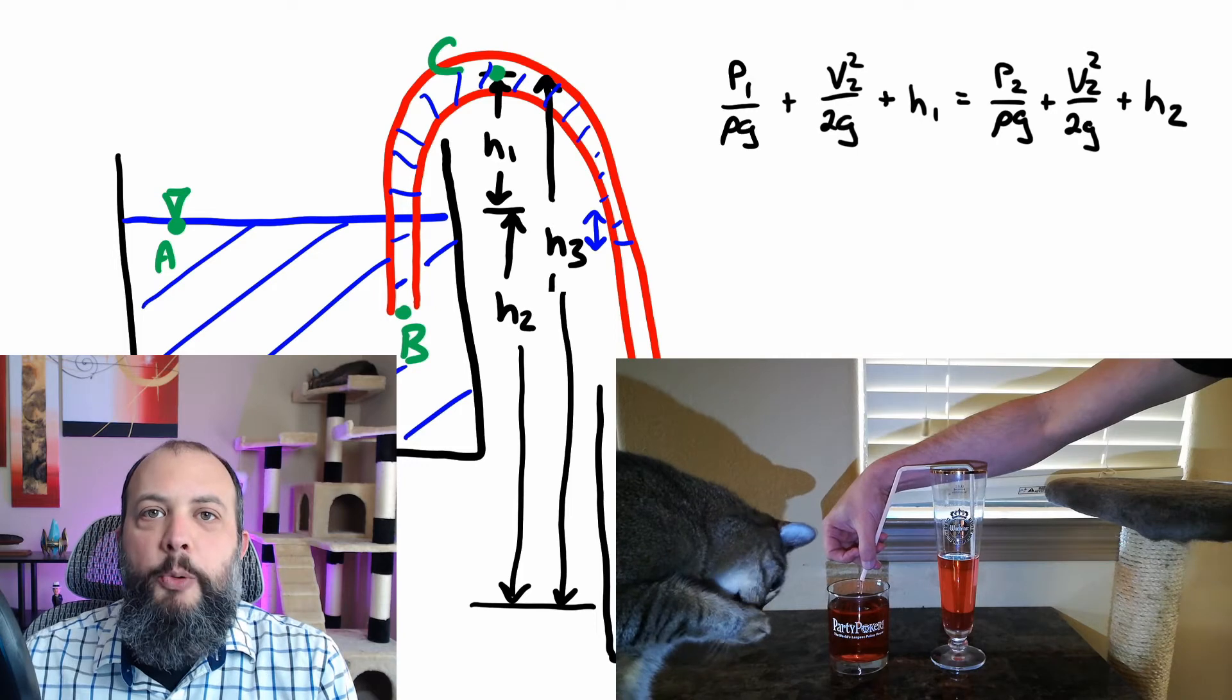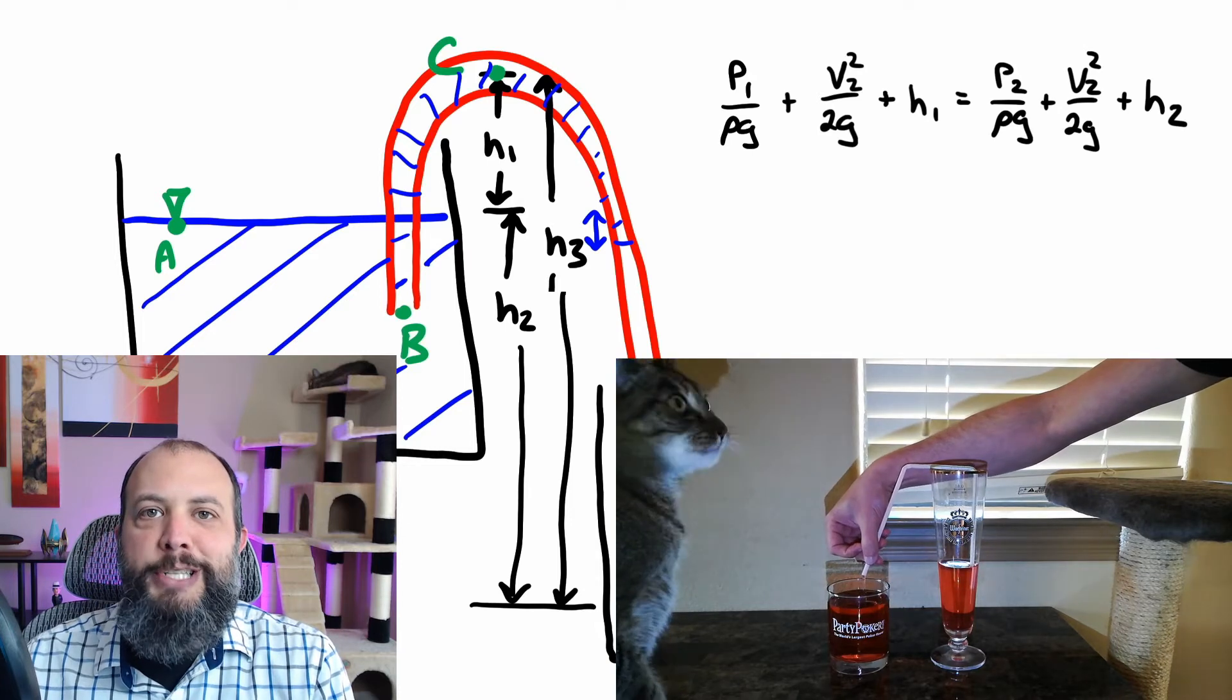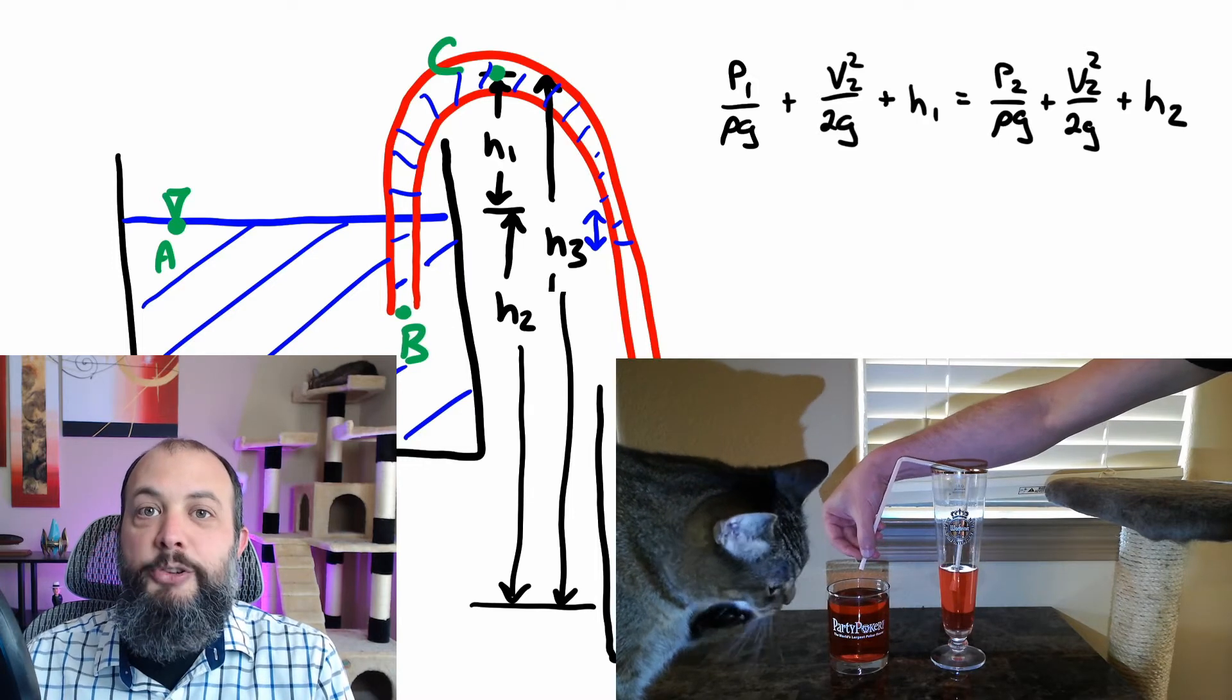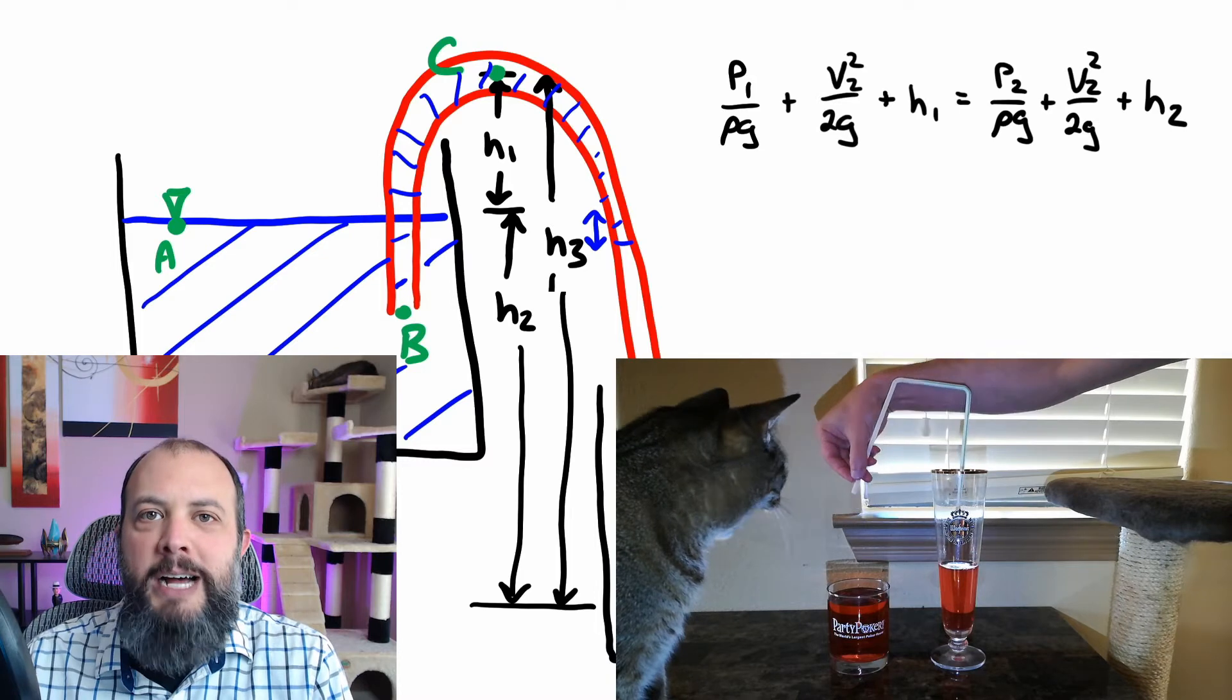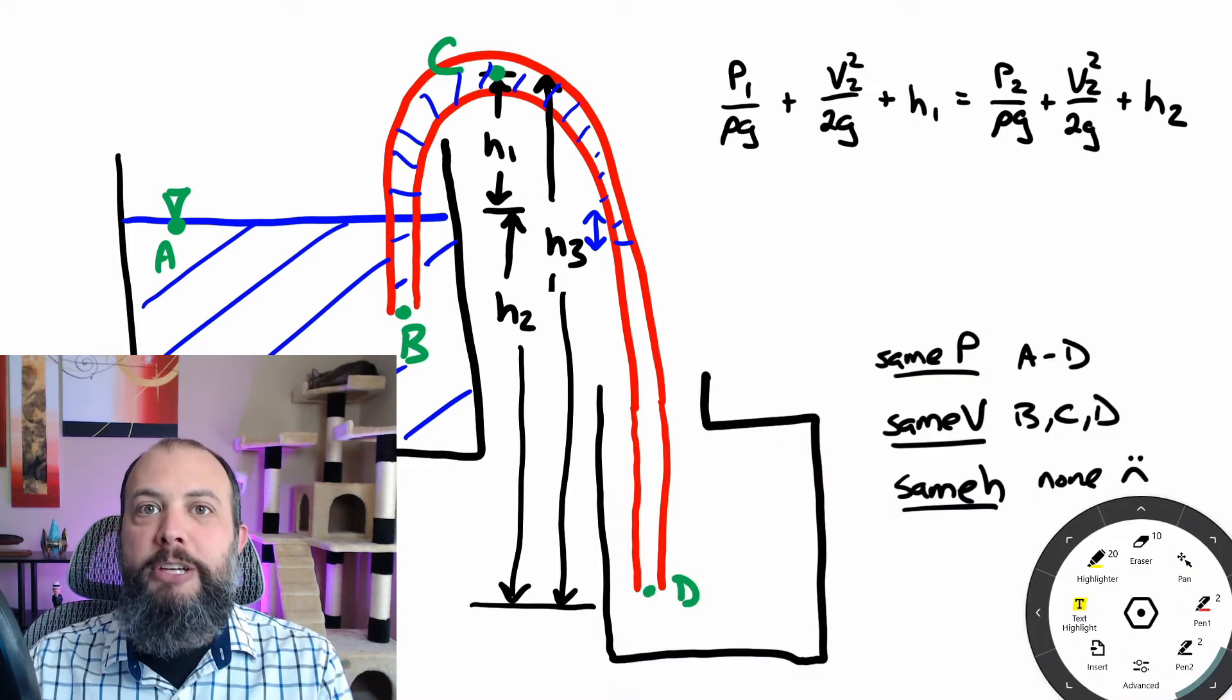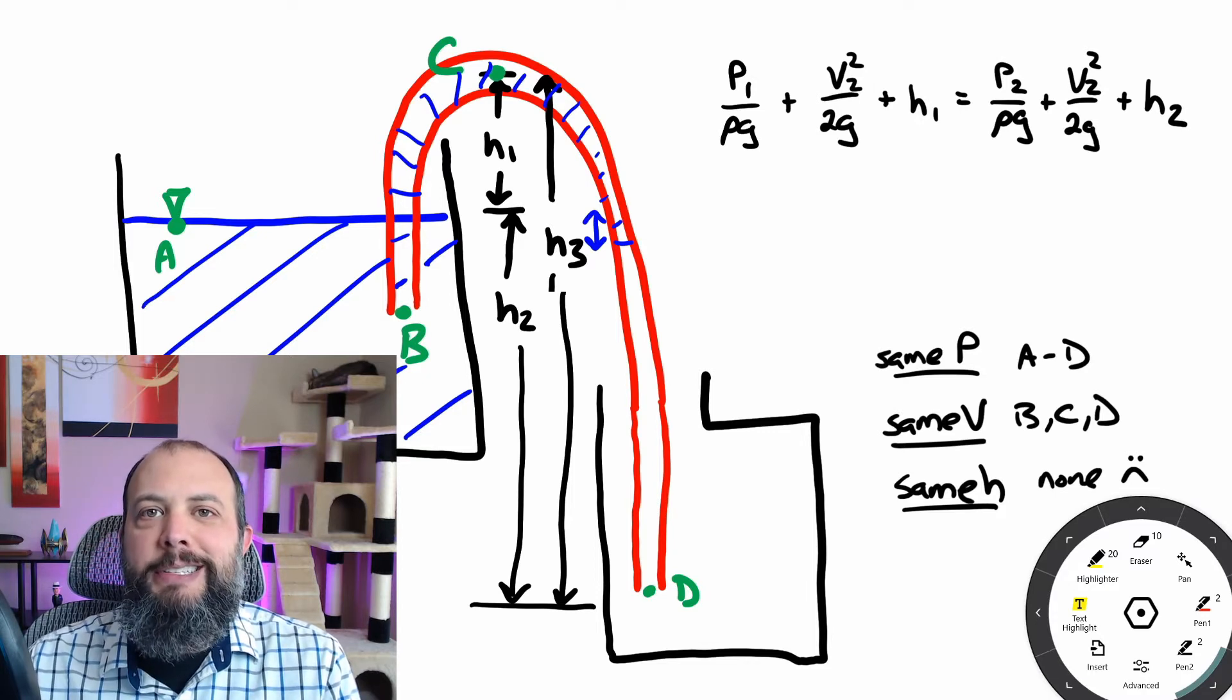All right, so how does all this apply to Bernoulli's equation? So I have the head form of Bernoulli's equation on the screen right now, and this is the version where all terms are in units of length or height. And when using Bernoulli's equation, you're always going to use it to compare two points to each other, and it's always going to be easiest if you can compare two points that have something in common. So in order to solve any sort of problem to deal with the siphon, we're going to either compare points A and D, because they're at the same pressure as each other, they're both open to the atmosphere, or we'll compare points B, C, and D, which are going to have the same velocity as each other.